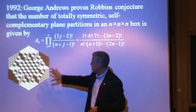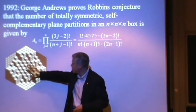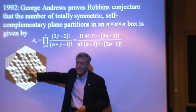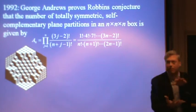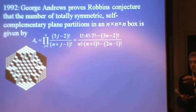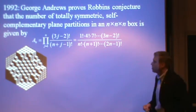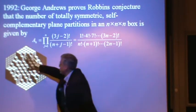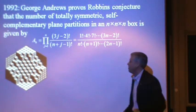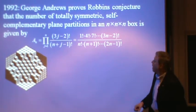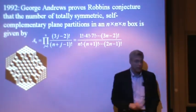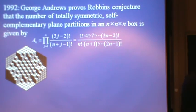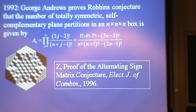It's also self-complementary in the sense that if you look at the cubes that are not there in that box, they are precisely another copy of the cubes that are there. So the complement, the set of cubes that are not there, exactly matches the set of cubes that are there. Dave Robbins had conjectured that the formula for counting these was exactly the same as the formula for counting alternating sign matrices. George Andrews proved that in 1992.